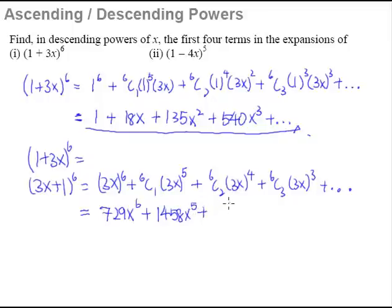As we proceed on, then 3^4 is 81, and 6C2 is 15, so 15 multiplied by 81, that will give us 1215x^4.